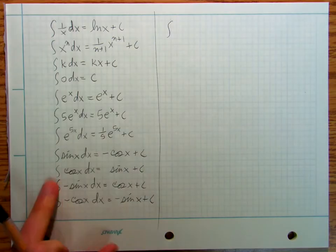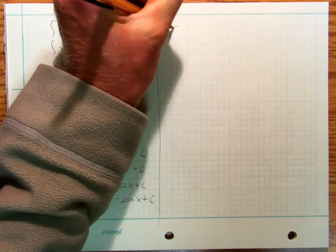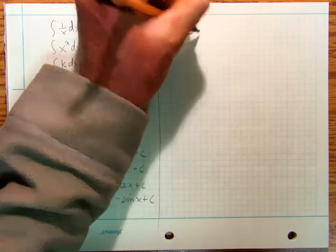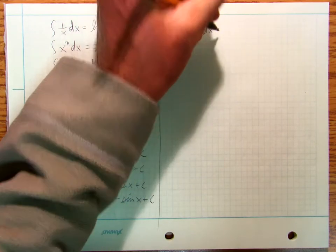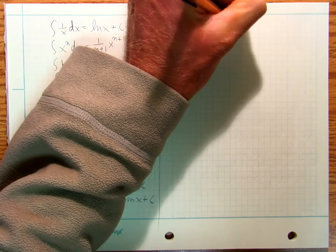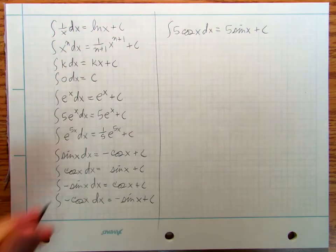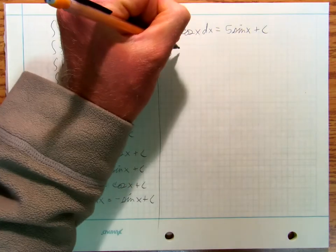So then we've got the integral of... Let's do this one. This one's pretty simple. The integral of 5 cosine x dx is going to be 5 sine x plus c.